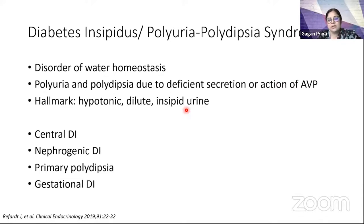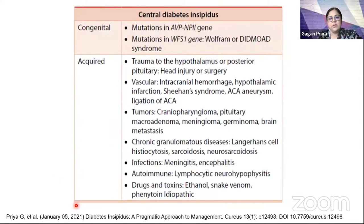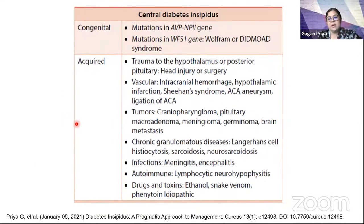The differential diagnosis is wide. We must consider the polyuria-polydipsia syndrome, which can include central or nephrogenic diabetes insipidus, increased intake of water due to several reasons — primary polydipsia — or gestational diabetes insipidus, which is unique to pregnancy. About 10% of cases are congenital or inherited, while the large majority, 90%, are acquired.